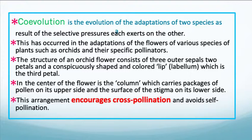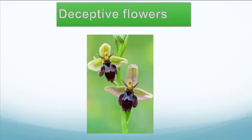This has occurred in the adaptations of the flowers of many species of plants, such as orchids, and their very specific pollinators. The structure of an orchid flower consists of three outer sepals, two petals, and a conspicuously shaped and colored lip, which is a third petal. And you can see that here.